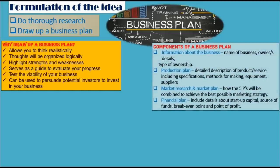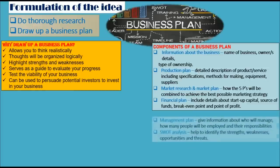Next we're going to look at the formulation of the idea. Important steps include thorough research and drawing up a business plan. A business plan puts the idea on paper so you can think about it realistically and organise thoughts logically. It highlights strengths and weaknesses, serves as a guide to evaluate progress, tests viability and can persuade potential investors. Components of a business plan include: information about the business, a production plan with product specifications, market research and marketing plan with the five P's, a financial plan with startup capital and break-even point, a management plan, and a SWOT analysis.